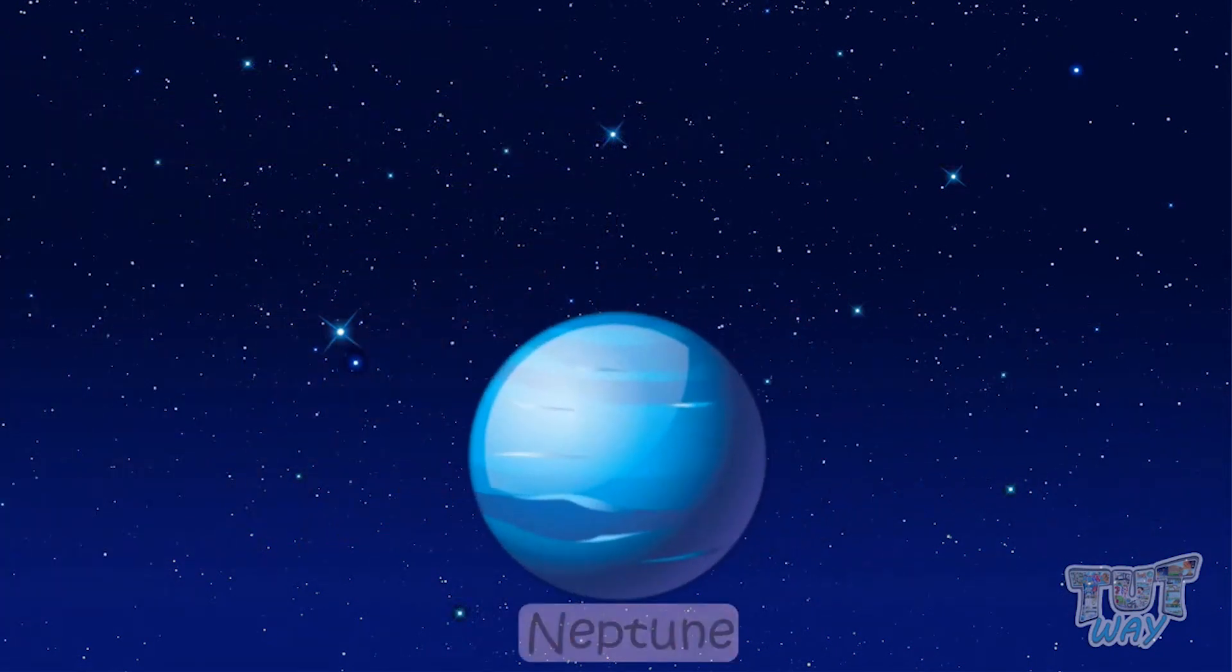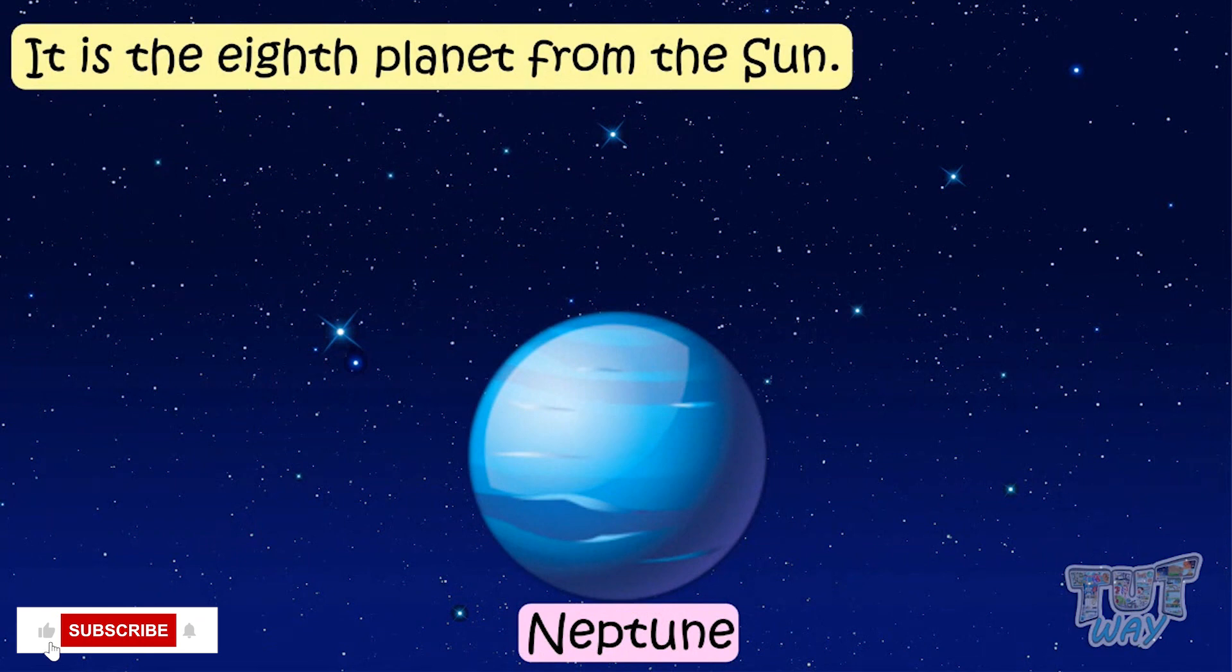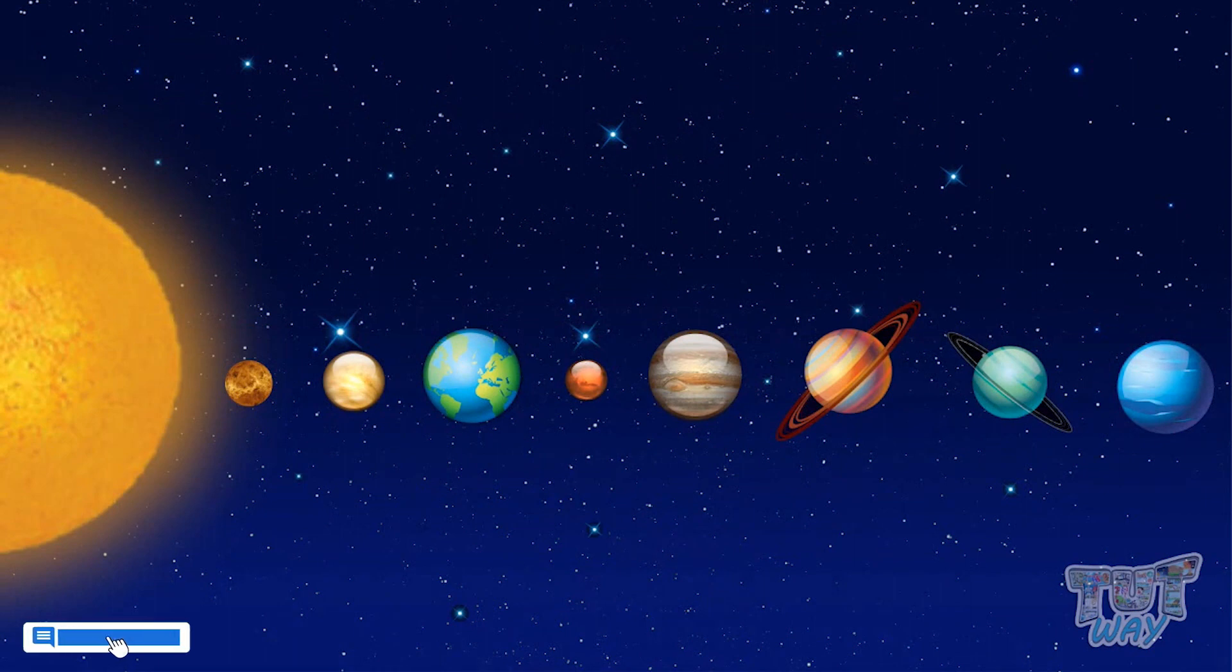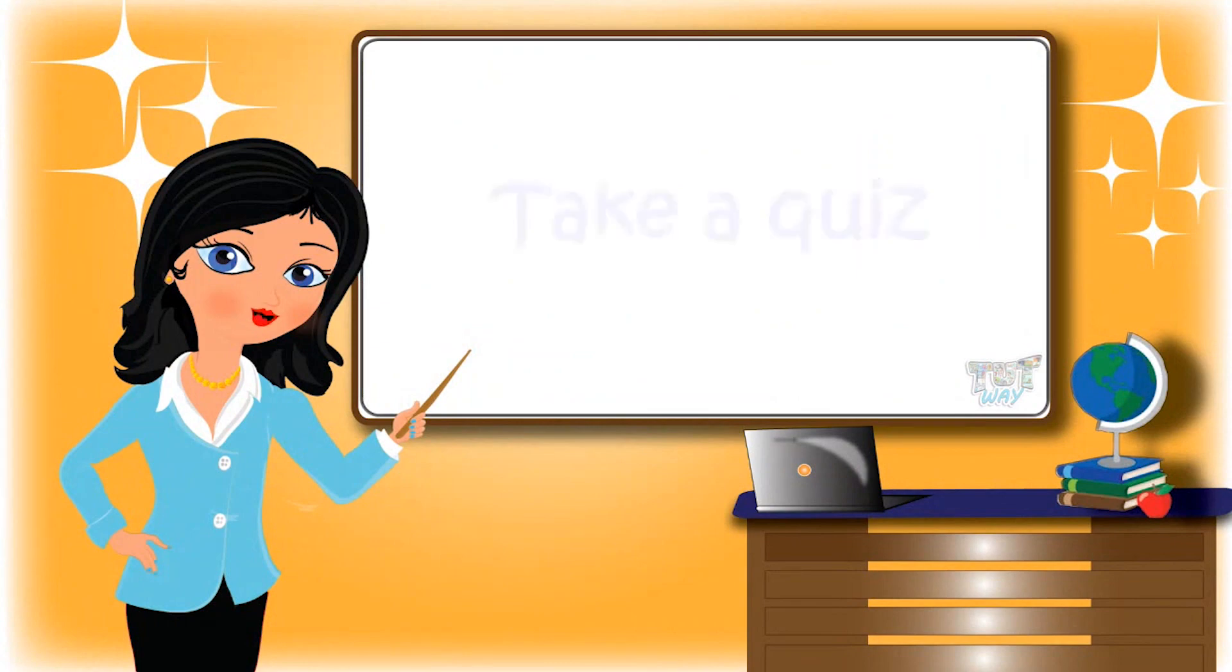Neptune is the eighth planet from the sun, so it's the farthest and coldest planet. So kids, today we learned about the sky and the heavenly bodies we see in the sky. Now go ahead and take a quiz to learn more.